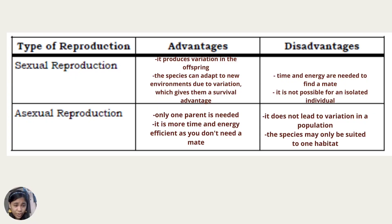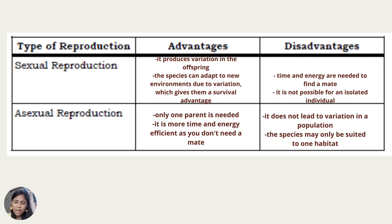The answers for Learning Task 6: Sexual reproduction advantages — it produces variation in offspring, and species can adapt to new environments due to variation, giving them a survival advantage. Disadvantages — time and energy are needed to find a mate, and it is not possible for an isolated individual. Asexual reproduction advantages — only one parent is needed, and it is more time and energy efficient as you don't need a mate. Disadvantages — it does not lead to variation in the population, and the species may only be suited to one habitat.